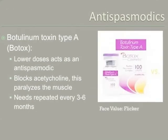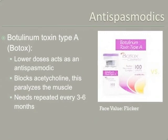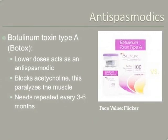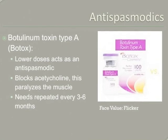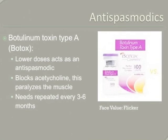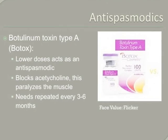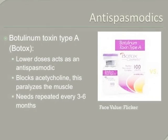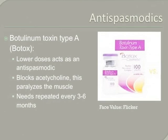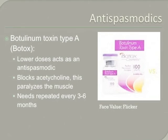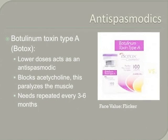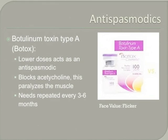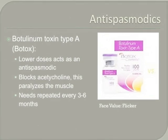Botulinum toxin type A, or Botox, is a toxic substance from the bacteria Clostridium botulinum. In high doses this bacteria can cause food poisoning. Research has shown that in low doses this toxin acts as an antispasmodic by blocking the chemical acetylcholine. In the peripheral nervous system, acetylcholine plays a role in skeletal muscle movement. When Botox is injected, acetylcholine is blocked and the muscle is paralyzed. This effect is not permanent; it has to be repeated every three to six months.